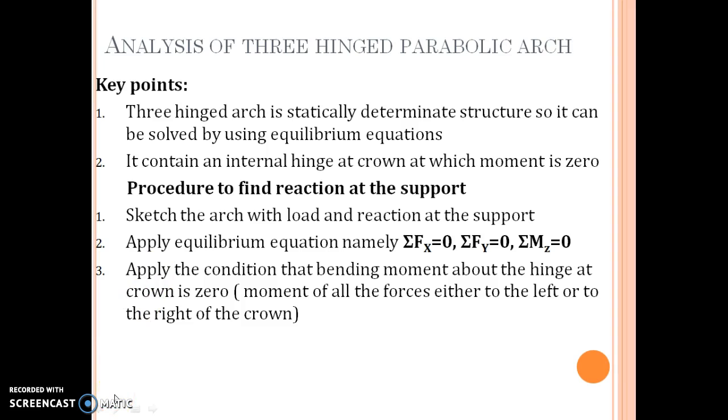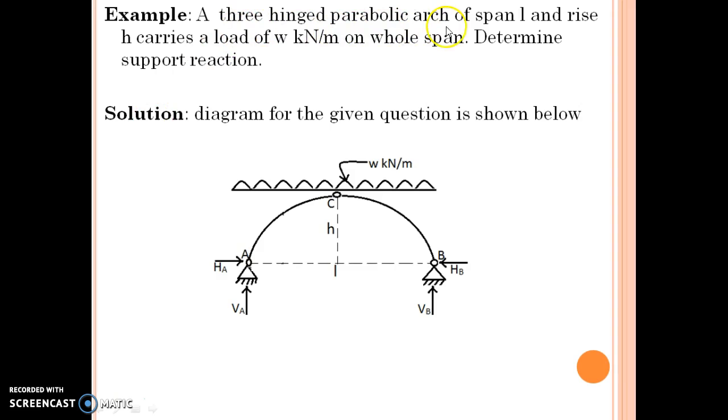Example: A three-hinged parabolic arch of span L and rise H carries a load of W kN per meter on whole span, that is UDL on whole span. Determine support reactions. The diagram shown in the figure is for the above example. W kN per meter load is applied on whole span.